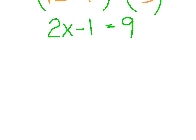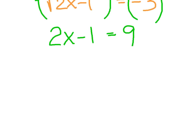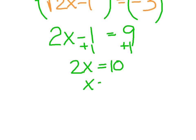Next, I need to solve for x. Add 1 to both sides. So I've got 2x equals 10, divide by 2, and x is equal to 5.